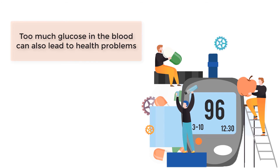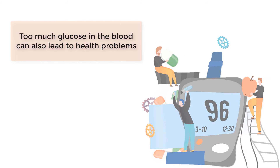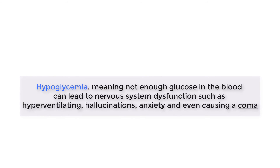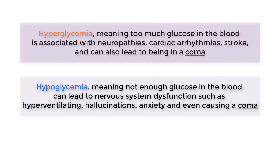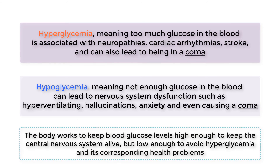Too much glucose in the blood can also lead to health problems. Hypoglycemia, meaning not enough glucose in the blood, can lead to nervous system dysfunction such as hyperventilating, hallucinations, anxiety, and even causing a coma. Hyperglycemia, meaning too much glucose in the blood, is associated with neuropathies, cardiac arrhythmias, stroke, and can also lead to being in a coma. Therefore, the body works to keep blood glucose levels high enough to keep the central nervous system alive, but low enough to avoid hyperglycemia and its corresponding health problems. The main organ involved in regulating blood glucose levels is the liver.